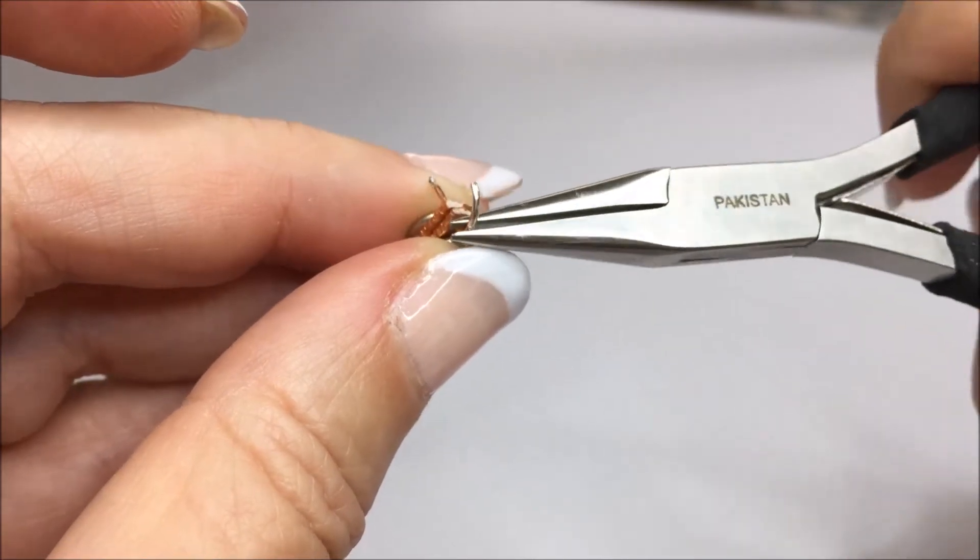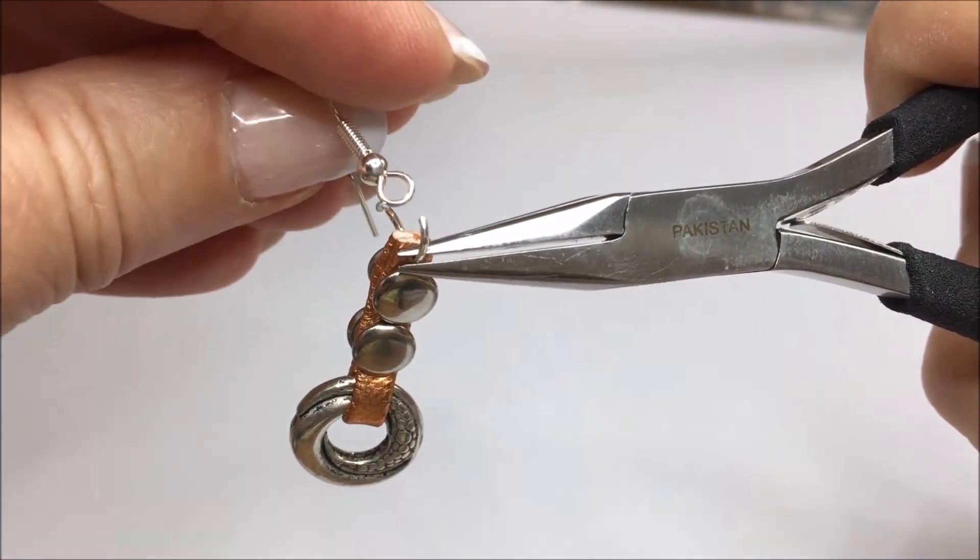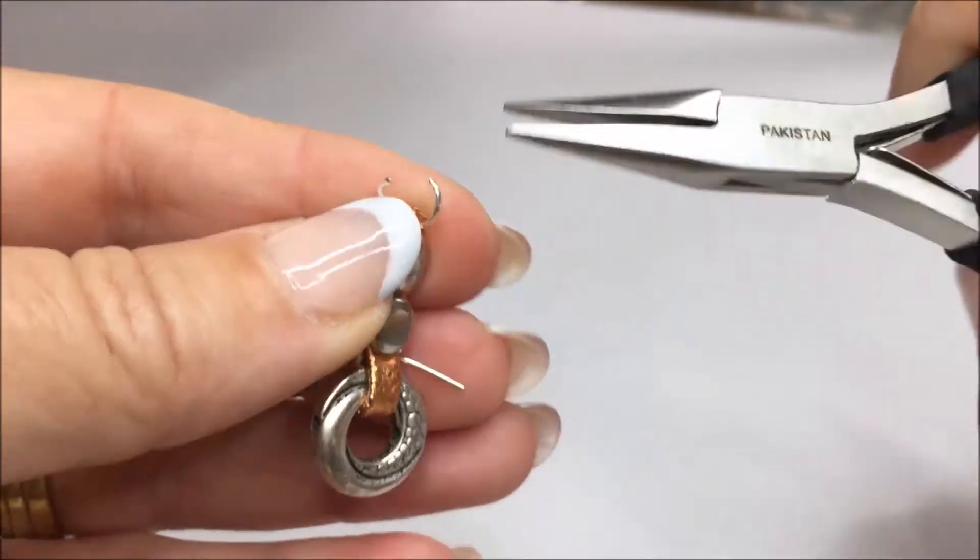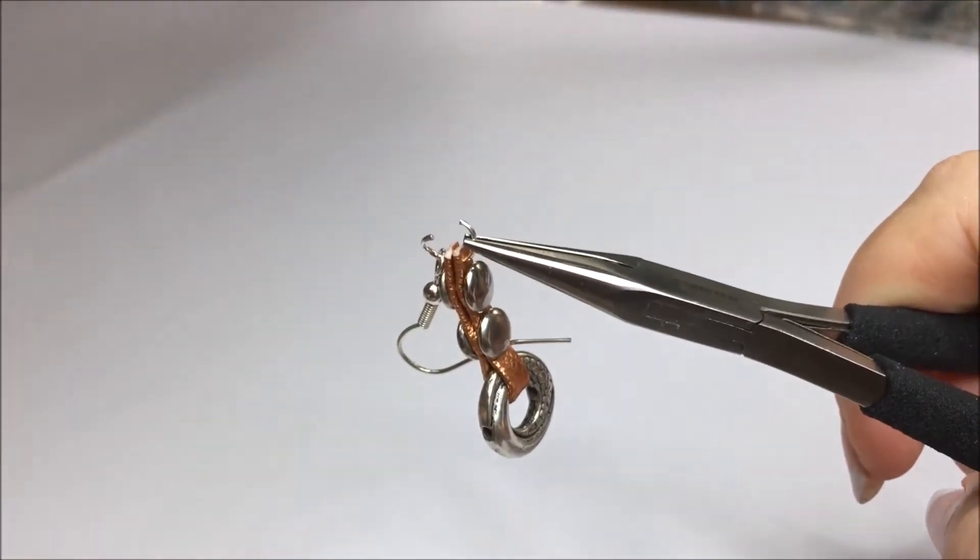Insert the jump ring through both layers and slip on the earring wire. There's no front and back to these earrings, so it doesn't matter which way the wire faces.